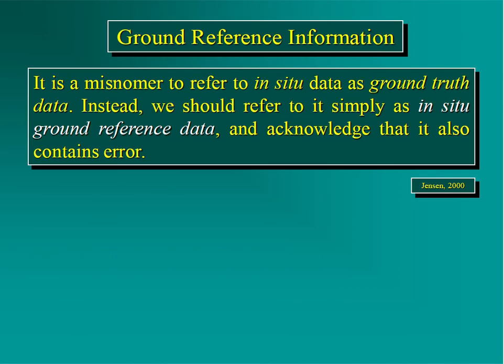On slide seven, Jensen emphasizes through vocabulary that error can affect in-situ field data collection just as much as it can affect sensor data, and can render it non-useful. These slides are probably about 10 to 15 years old, and back then people used to call in-situ data 'ground truth data.' People don't really say that as much anymore — it's now acknowledged that error affects those data too. Rather, you'll hear it described as 'ground reference data' or 'calibration validation data,' with reference to the activity or reason for collecting it.